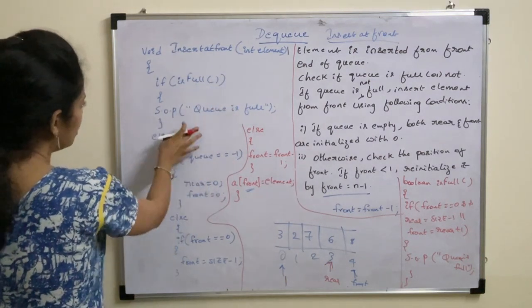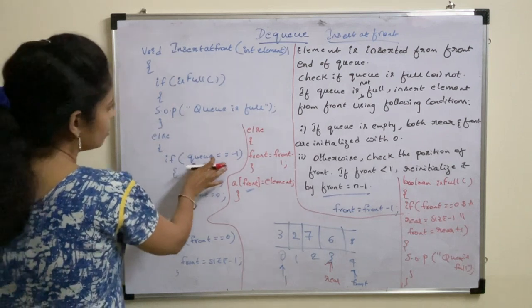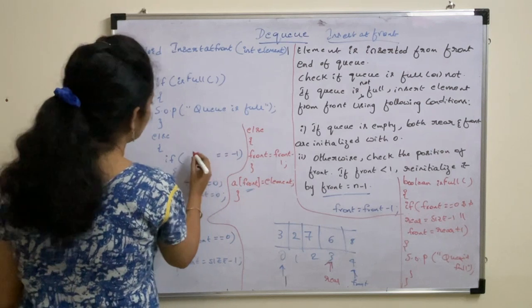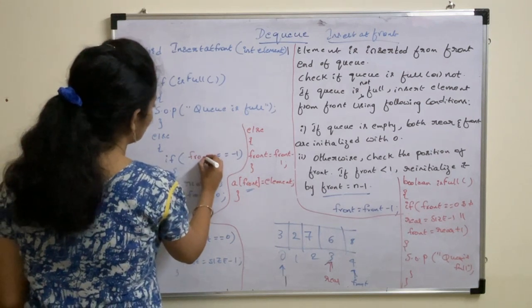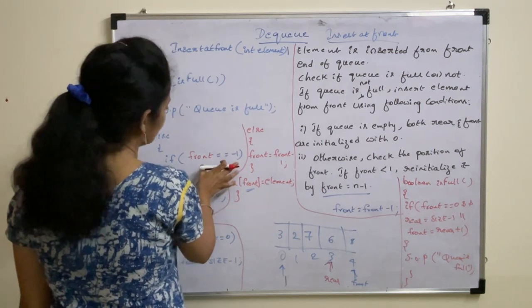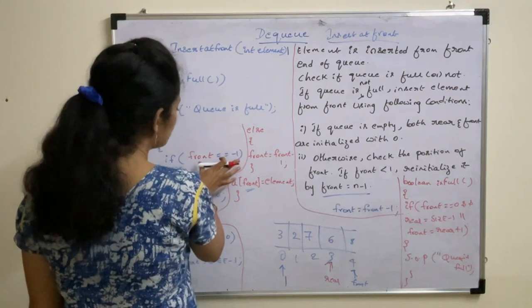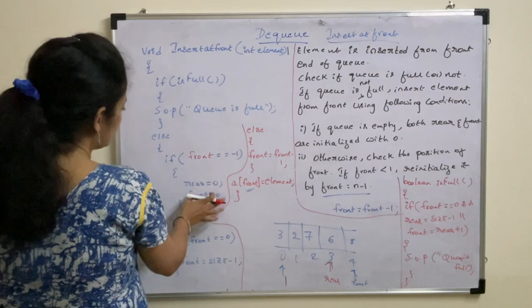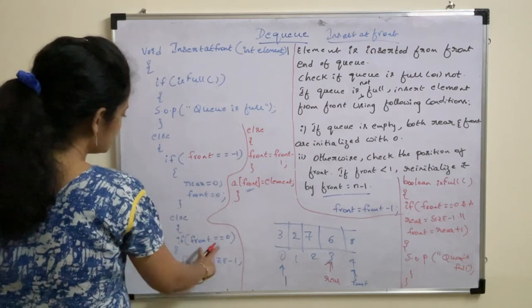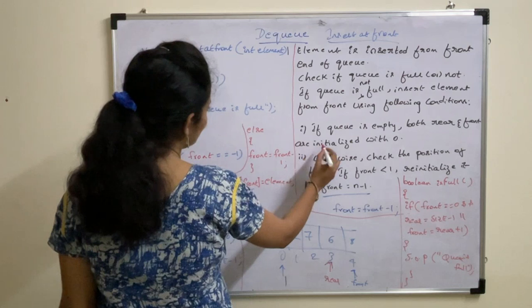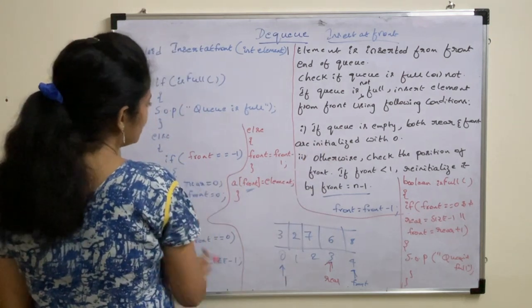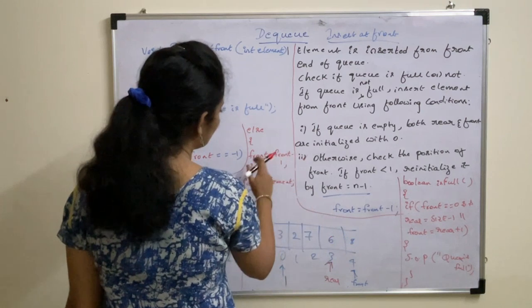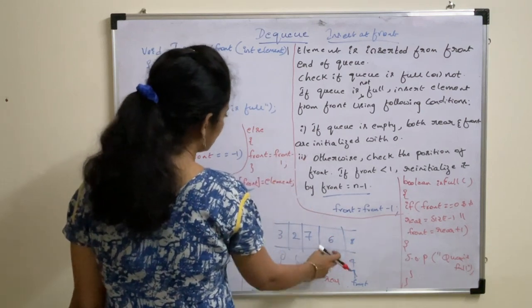We also check whether the queue is empty. If front equals minus 1, that indicates the empty condition. Then you change the values accordingly. Else, check if front equals 0 — that is your second condition. If neither condition is true, then decrement the front value and insert the value at that position.